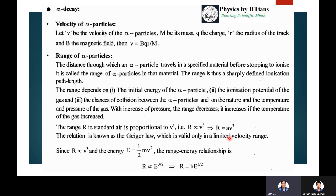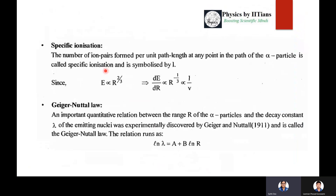Geiger's law is valid only in a limited velocity range. Since R is proportional to v³ and energy E = ½mv², the range-energy relationship gives R proportional to E^(3/2), or R = b·E^(3/2). Specific ionization is the number of ion pairs formed per unit path length at any point in the path of the alpha particle. Since E is proportional to R^(2/3), dE/dR is proportional to R^(1/3), and it is proportional to 1/v.